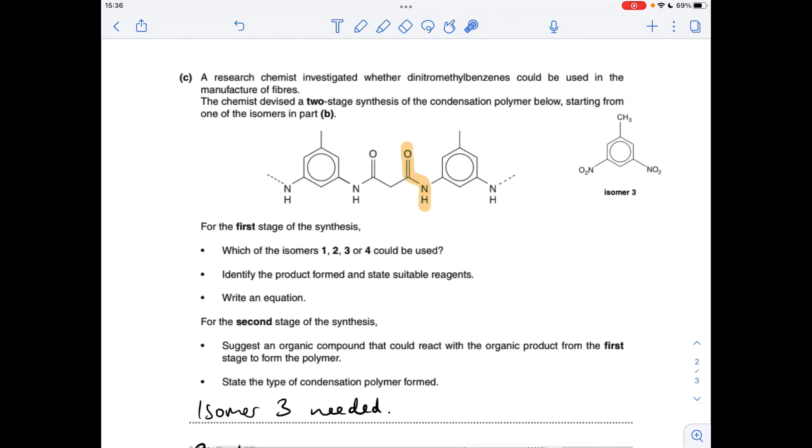Going back to the structure of the polymer for the very last question, the functional group we've got here is an amide. This is an example of a polyamide.